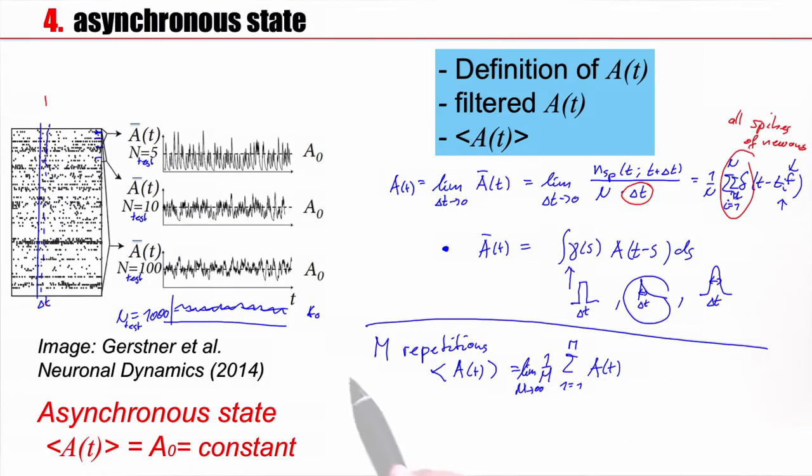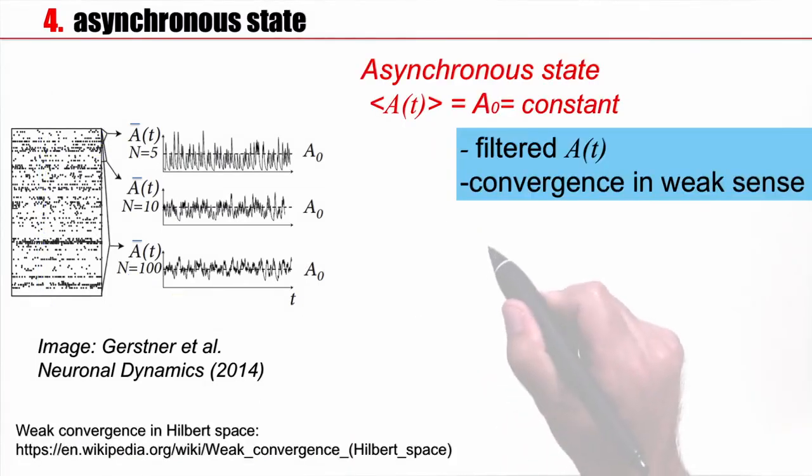Formally, if I take the limit m to infinity, I could say I have asynchronous activity, a stationary state of asynchronous activity, if this expectation is constant. Since I never have the possibility to run infinitely many repetitions, even 100,000 repetitions costs a lot in terms of simulation time, I can look at this also slightly differently.